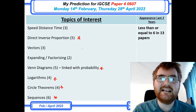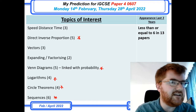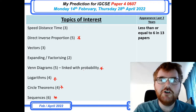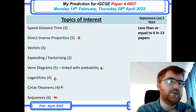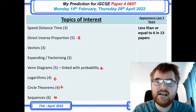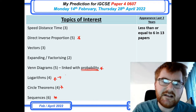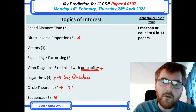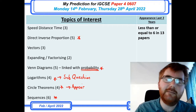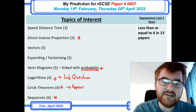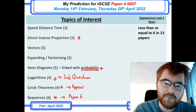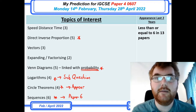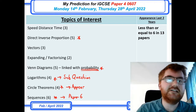One thing to take into account: look at the paper 2 that you have already done. If these topics have not appeared on your paper 2, they are far more likely to appear. Venn diagrams are usually linked with probability — they'll ask you some set notation Venn diagram questions, and then it will drift into probability. Logs can often be a sub-question to equation solving. Circle theorems will appear somewhere if not on paper 2. Sequences will depend on the paper 6 that comes up later.